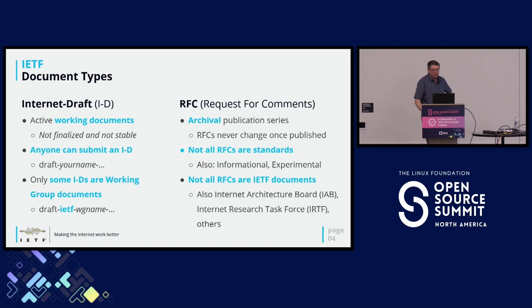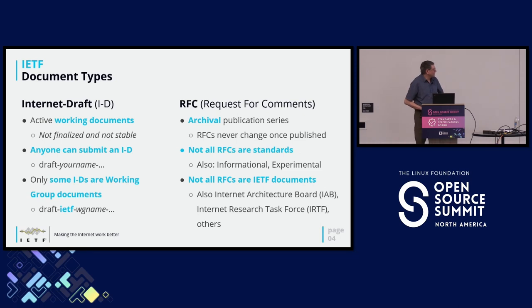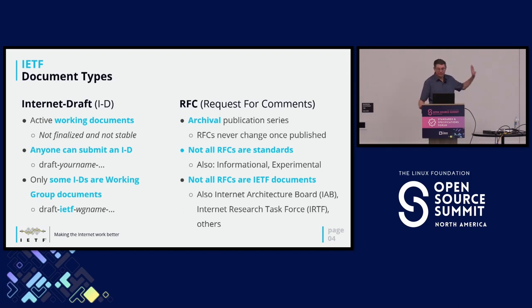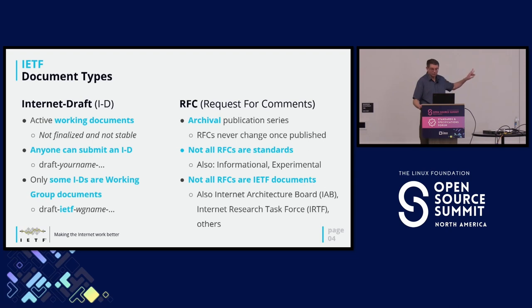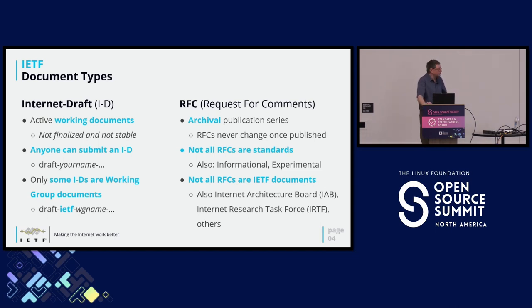In the IETF there are two types of documents. An Internet Draft is a work in progress — it can change at any time, so it's not a good reference because it could change by the time you look at it. Anyone in the world can submit an Internet Draft. You can usually tell by the file name, which starts with 'draft' followed by something like a surname — anything other than 'draft-ietf'. Only some Internet Drafts are actually IETF products; the IETF ones have 'draft-ietf' in the file name.